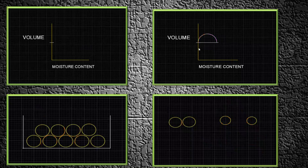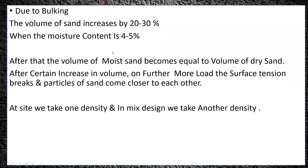To summarize: the volume of sand increases by around 20 to 30% when the moisture content is between 4 to 5%. After that, the volume of moist sand becomes equal to the volume of dry sand. On further addition of water, the surface tension breaks and the particles of sand come closer to each other. This is all about the bulking of sand and its phenomena.